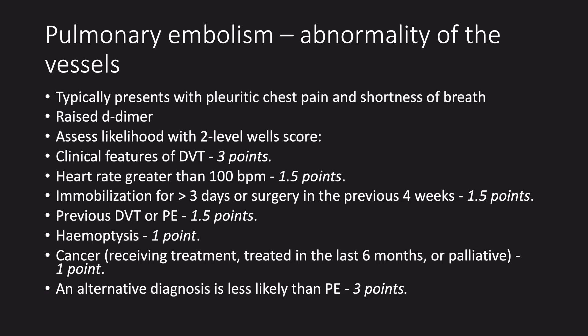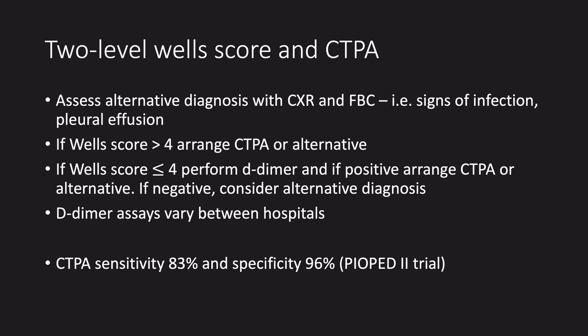Pulmonary emboli typically presents with pleuritic chest pain and shortness of breath. Patients typically have a raised D-dimer. The WELLS score is used to assess the clinical likelihood of a PE, with points awarded for specific parts of the clinical history and physical signs. We recommend performing a chest x-ray first to look for an alternative diagnosis, as a pleural effusion or pneumonia can also cause pleuritic chest pain. If the WELLS score is over 4, NICE guidance suggests progressing straight to CTPA. If the score is 4 or under, we need to measure the D-dimer — if it's normal, PE is unlikely; if it's raised, we move to CTPA.